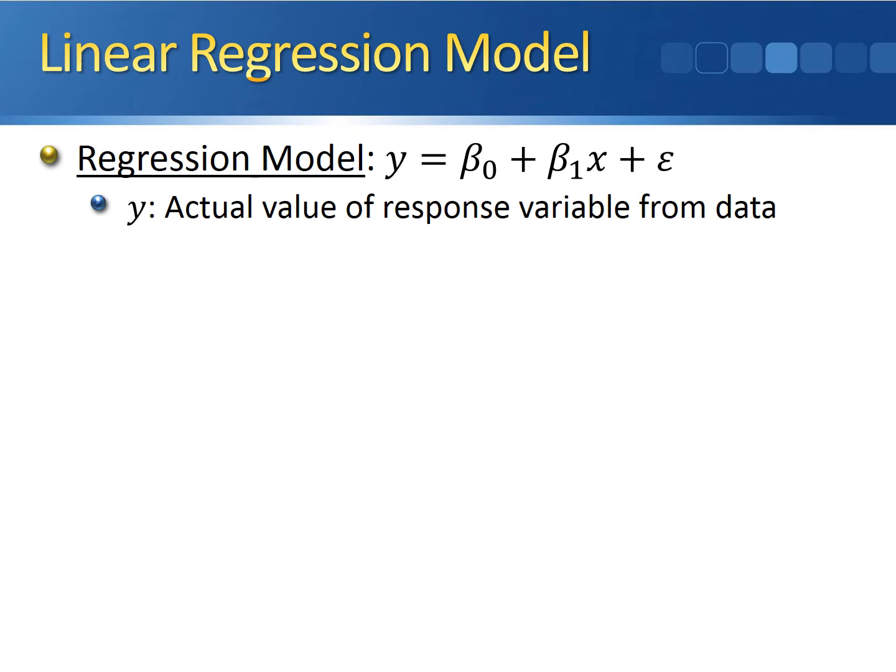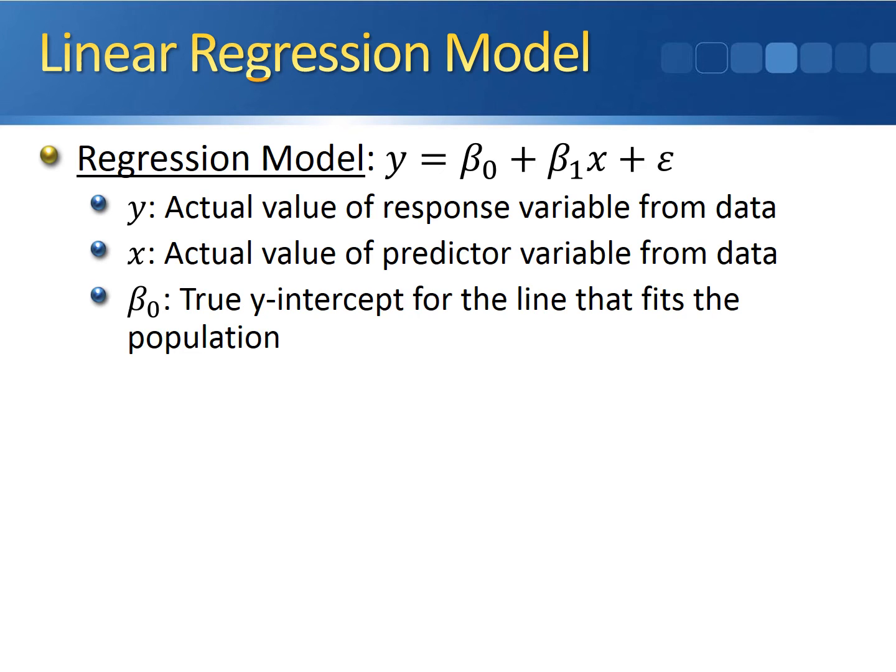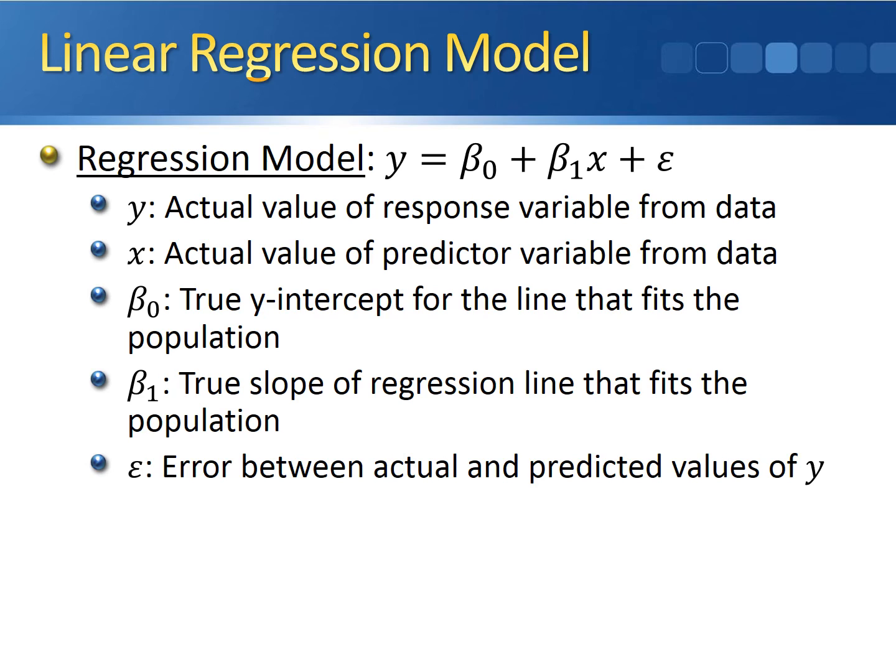On the right side of the equation, we have beta0 plus beta1 times x plus epsilon. Here, x is going to be the actual value of a predictor variable from the data. Beta0 represents the true y-intercept for the line that fits the population. Beta1 is the true slope of the regression line that fits the population. And epsilon represents the error between the actual and the predicted values of y, since we already know that not every observation is going to lie directly on our regression line.